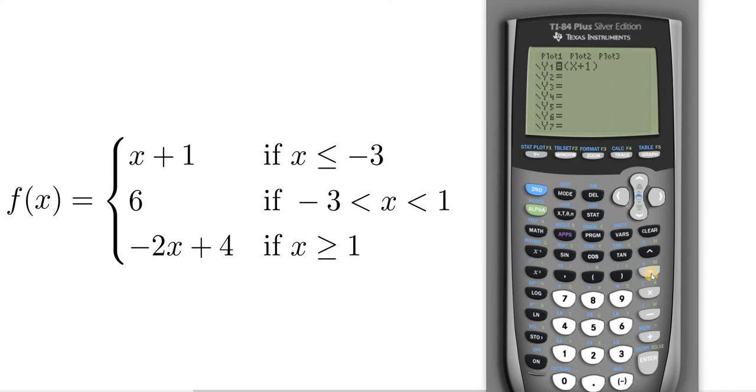Then you put the division sign. Then a parentheses. And now you need to enter x less than or equal to negative 3. So here's x. Now here's the tricky part. You have to find the less than or equal to. So you see this blue key here. It says test. It's right above the math key. So to access that, you first have to hit second. So second test.